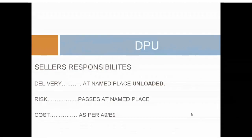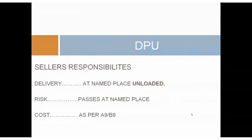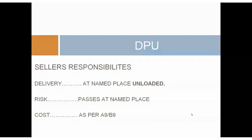Just on the new rule DPU: delivery at named place, unloaded; risk at named place. The costs — for the first time I've included these as per A9 and B9 in Incoterms 2020, which actually tells you the costs in detail. I love that — it saves me telling all my clients and writing out the costs for them. I just say go to A9 and B9, depending on whether you're the buyer or the seller, and you'll find your costs.